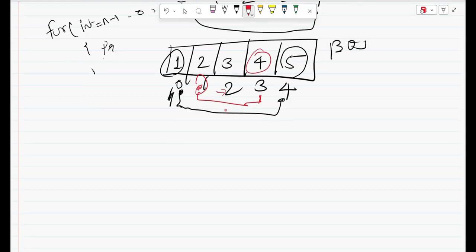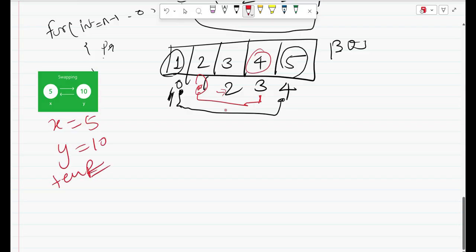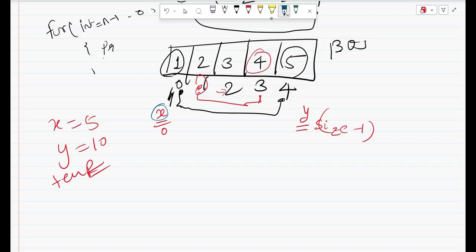If you remember from our last video, we learned how to swap two variables using a third variable. We took the example of x equals 5 and y equals 10 and then we used the temp variable. The same concept we are applying here. Now this element, let's say this 0th position, I say it as x and the last position I will say as y. So x is always 0 and y is always size minus 1. Instead of x and y, I'll give meaningful names. Instead of x, I will give low and instead of y, I'll give high.